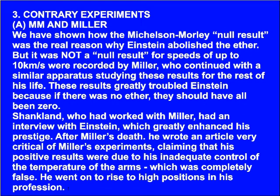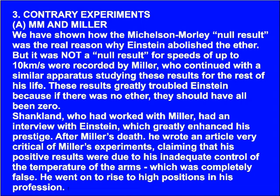Regarding contrary experiments — Michelson-Morley and Miller: we have shown how the Michelson-Morley null result was the real reason why Einstein abolished the ether. But it was not a null result, for speeds of up to ten kilometres per second were recorded by Miller, who continued with a similar apparatus studying these results for the rest of his life. These results greatly troubled Einstein, because if there were no ether, they should have all been zero. Shankland, who had worked with Miller, had an interview with Einstein which greatly enhanced his prestige. After Miller's death, he wrote an article very critical of Miller's experiments, claiming that his positive results were due to inadequate control of the temperature of the arms — which was completely false. He went on to rise to high positions in his profession.